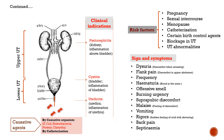In this slide we will cover causative agents, risk factors, signs and symptoms, and clinical indications of urinary tract infections. The causative agents may be E. coli, Enterobacteria, Proteus, and Chlamydia, or the infection can also occur via catheterization.